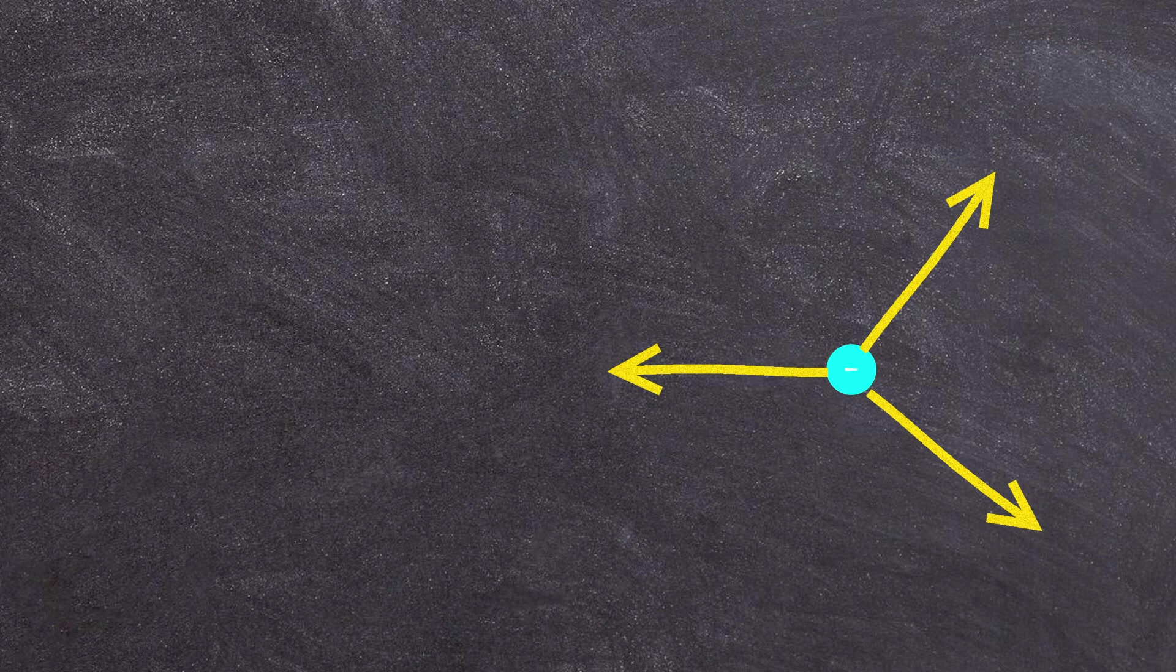if I have a free electron zooming around, the only thing its energy depends on is the speed. The faster it's going, the more energy it has. But what energy doesn't depend on is the direction the electron is moving in.